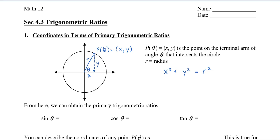Using this triangle on the circle, we can obtain the primary trig ratios. Sine theta is the opposite divided by the hypotenuse, so in this case it will be Y divided by R. Cos theta is adjacent divided by the hypotenuse, so we have X divided by R. And tan theta is opposite divided by adjacent, so we have Y divided by X.